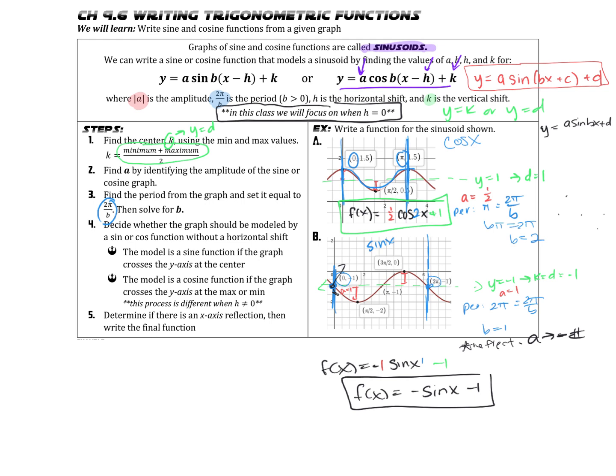Key things here: identify the center — that's your K or D value. Use the center to identify the amplitude. Mark on your graph to figure out where the period is — that will also help you determine whether you're looking at sine or cosine. Use the period to solve for B, since the period equals 2π over B. Then decide whether to represent the graph as sine or cosine, and check for a reflection. If there is one, put a negative in front of the function.